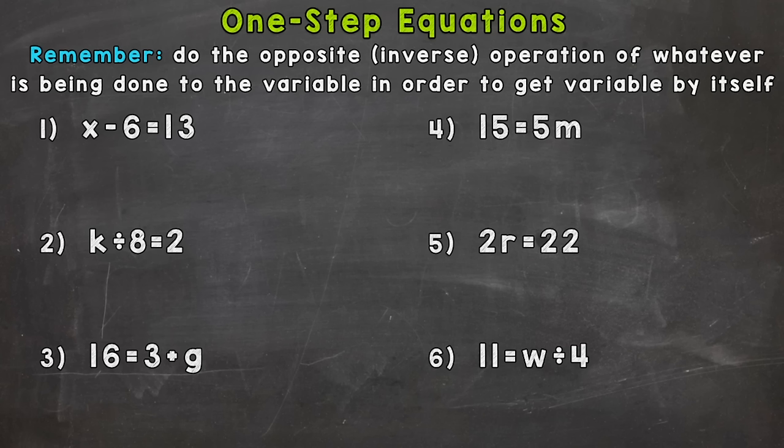So for number one, we have x minus 6 equals 13. So we need to take a look at what we're doing to the variable x, our missing piece. And we're subtracting 6. So we need to do the opposite. So that would be adding 6. So we need to add 6 to that side. And the reason we do that, because we have x minus 6 plus 6, the minus 6 plus the 6 gives us 0, essentially canceling those 6s out. So we're just left with the x. That gives us the x by itself.